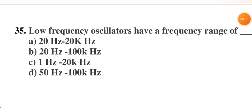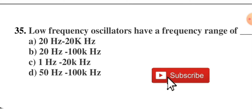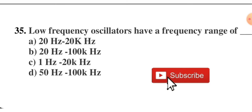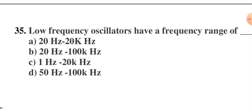Low-frequency oscillators have a frequency range of — 20 Hz to 20 kHz, 20 Hz to 100 kHz, 1 Hz to 20 kHz, or 50 Hz to 100 kHz? The right option is 20 Hz to 100 kHz, so option B is correct.